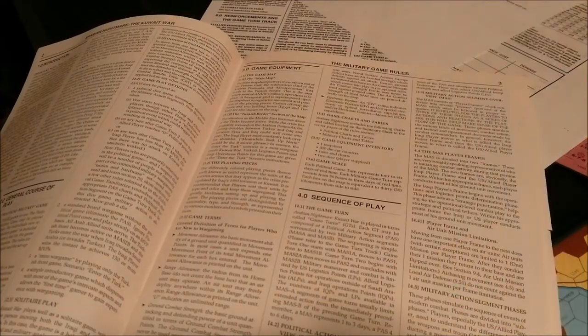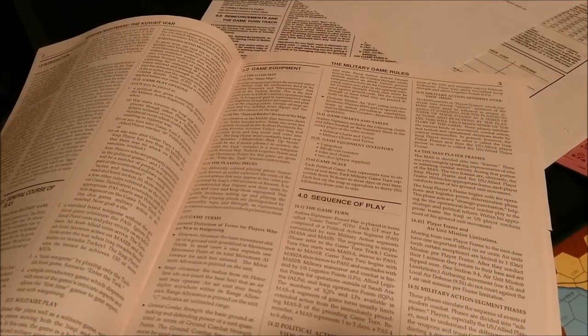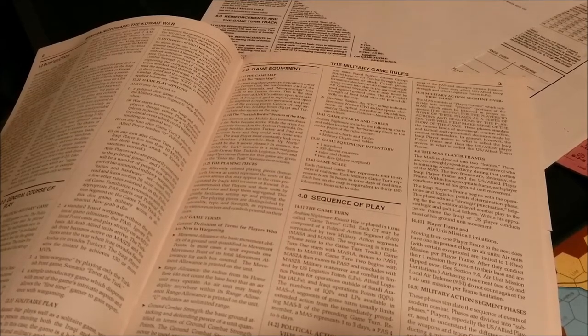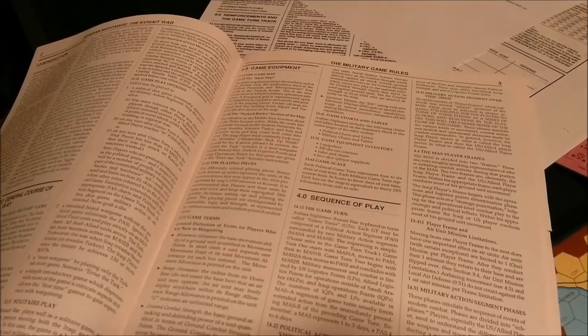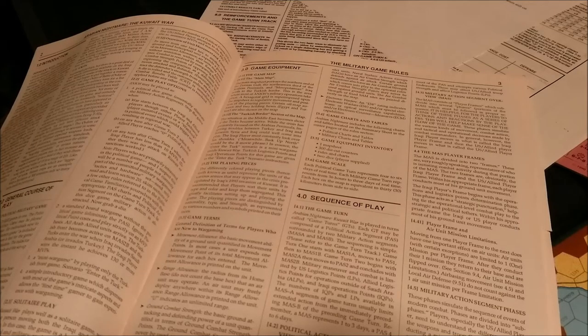The game comes with basically three games: the political game, the military game, and the introductory game. We'll be taking a look at the introductory game today. The game equipment inventory is a map sheet, 300 die-cut counters, rules and charts, and two dice are required to be supplied by the player.